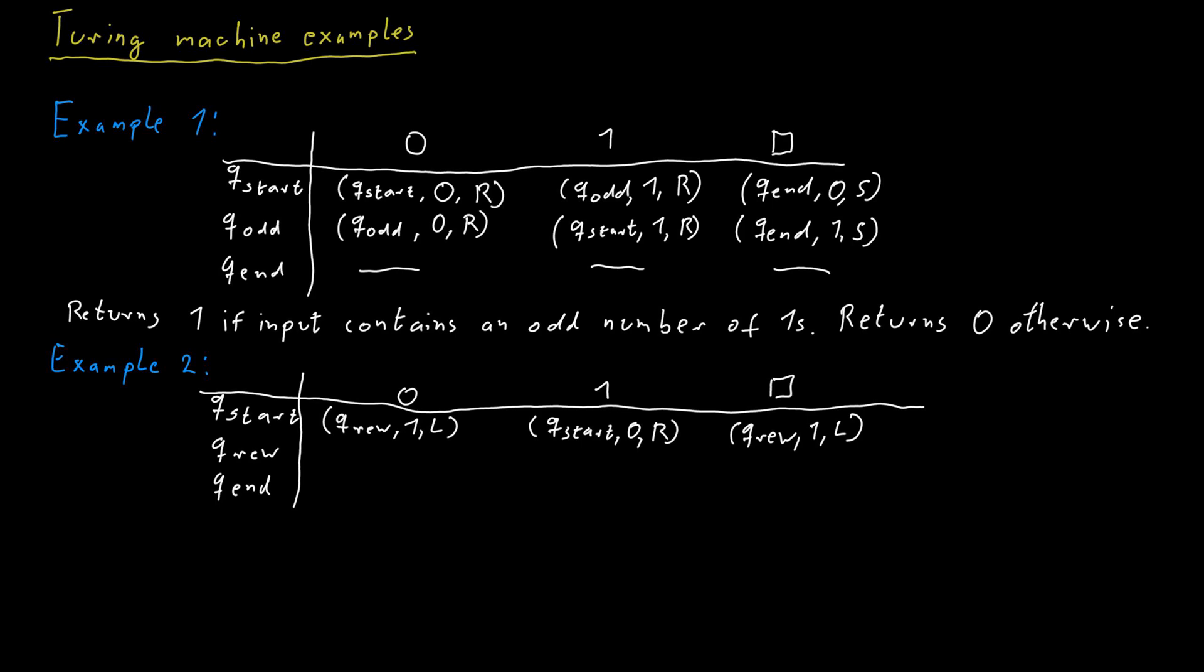Now for q_ref, we would stay in that state if we read a 0, we would not change that 0 and we would move the head one cell to the left. If we read a 1, we would stay in the state as well and write a 1 so not change it and move one cell to the left.